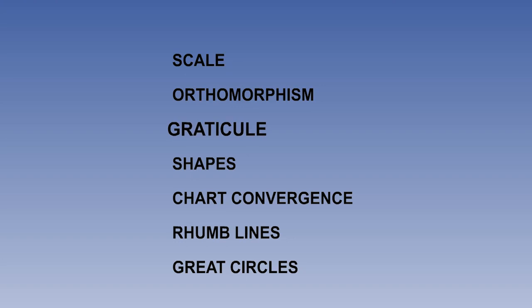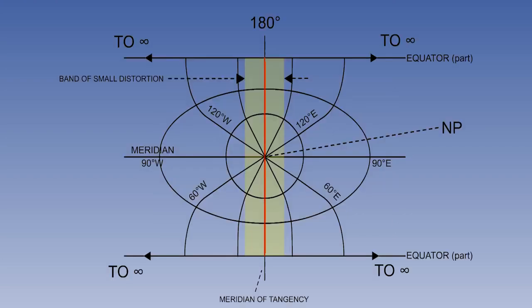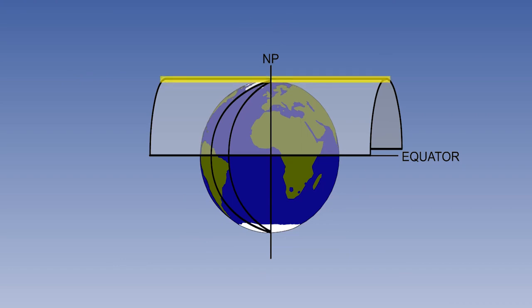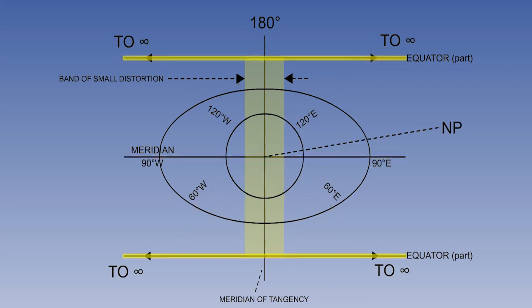How will the graticule look? Let's consider the datum meridian first. This is a straight line on the projection. Let's also look at the meridian perpendicular to the datum meridian. This runs along the top of the cylinder. This is also a straight line on the projection and we have already noted that the equator appears as two straight lines. Now let's consider the other meridians. We know that the projection is orthomorphic. We have adjusted it so that it is. Therefore, meridians must cross parallels at right angles.